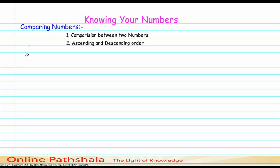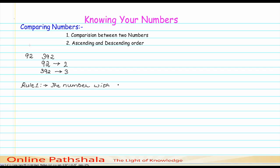Let me take an example. I have taken up two numbers: 92 and 392. Let me arrange these numbers with their number of digits. 92 contains two digits, 392 contains three digits. For comparison, we have a rule — Rule Number 1. This rule says that the number with a higher number of digits is greater than the other.